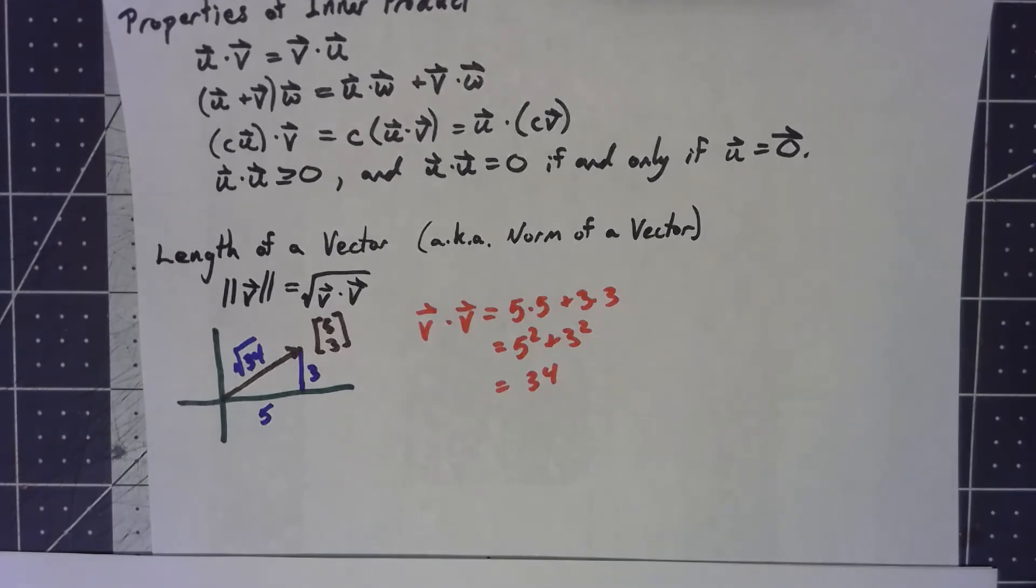Because when you start talking about things in more than three dimensions, length doesn't make sense, but norm is kind of just a generalization of that.